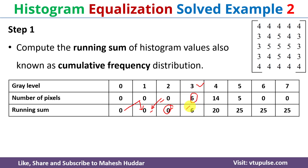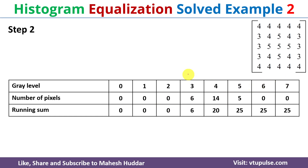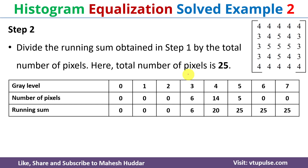For gray level 3, the number of pixels is 6 and the previous running sum is 0, so 0 + 6 = 6. For gray level 4, the number of pixels is 14 and the previous running sum is 6, so 6 + 14 = 20. We will similarly calculate the remaining running sum values for gray levels 5, 6, and 7.